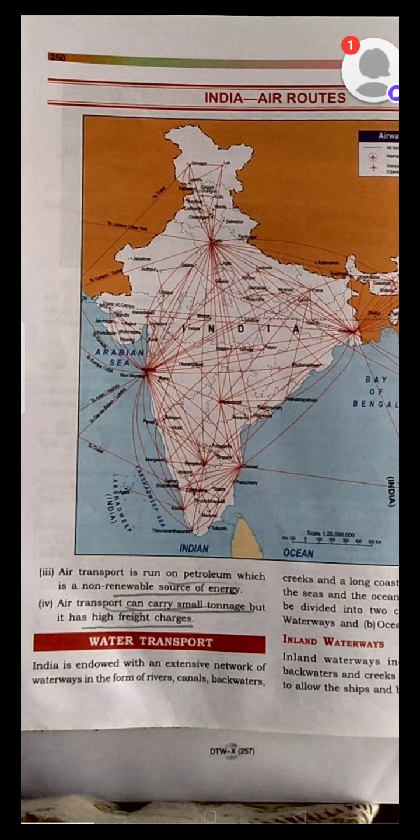Apart from that, we had also studied that the railway system was divided into 17 zones with their respective headquarters. We had studied about the track system — that is the width of the track of the Indian railways — and found that it was divided into 3 categories: the broad gauge, the meter gauge, and the narrow gauge.